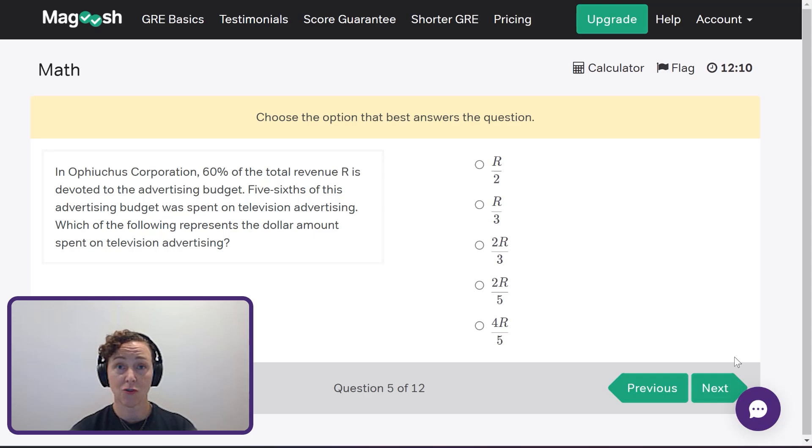Plugging right along to our next question in that corporation, which we are never going to bother to try to pronounce. No one needs to do that on the test. Don't do that. Just the O corporation. 60% of the total revenue R is devoted to the advertising budget. Five-sixths of this advertising budget was spent on television advertising, which is the following represents the dollar amount spent on television advertising. So this is asking me for, or asking me to take percents and fractions off of an unknown total. And I have variables in the answer choice. So I'm immediately thinking, I'm going to plug in something to make this easy for myself. I'm going to say that the total revenue R is 100. So that's my total revenue. And now I'm just going to use that to walk through this problem. 60% of the total revenue. I've made that easy. That's just going to be $60. So that is the ad budget. And then five-sixths of the ad budget, which is five-sixths of 60, that's going to be a lot of two television advertisements. So five-sixths of 60, that's 50. So 50 is going to go to television. And that's what I'm solving for, which is the following represents the dollar amount spent on television advertising. $50.